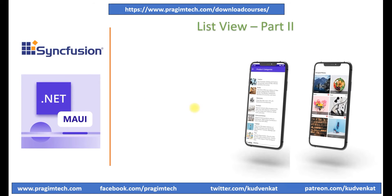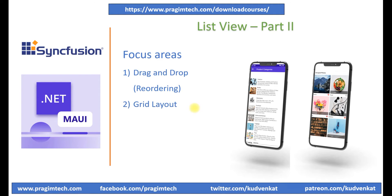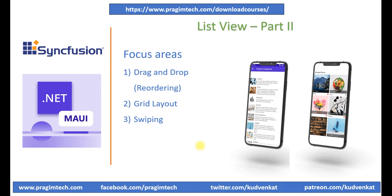In this session, we will focus on the features of list view such as drag and drop, which reorders items by dragging them using the drag indicator view. We'll also understand converting the linear layout to a grid layout with a predefined number of columns. Swiping is another great feature and we will associate actions from left to right or right to left. Let's now switch to the code and get going with the drag and drop feature.